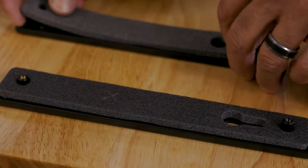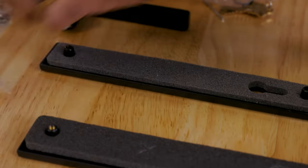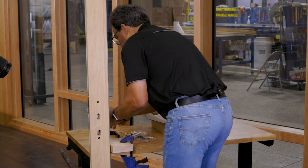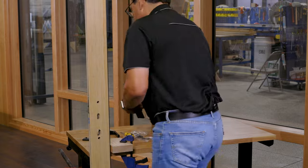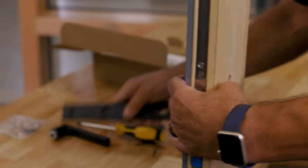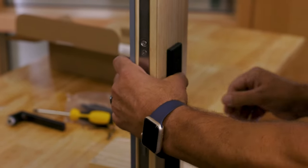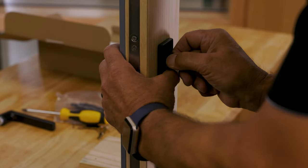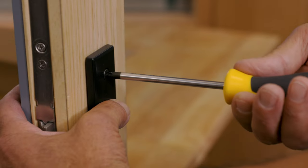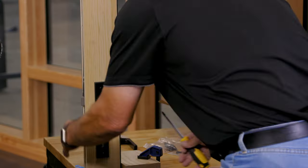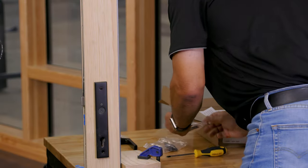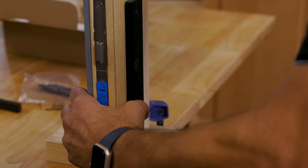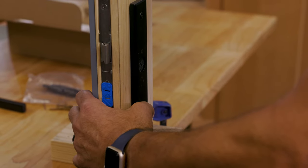First place we're going to start off is getting the gaskets on the escutcheons. I like to start with the top screw. I just like to hand tighten it. You don't want to tighten everything down yet because you may need to adjust it slightly. And again the bottom screw just to hand tight.